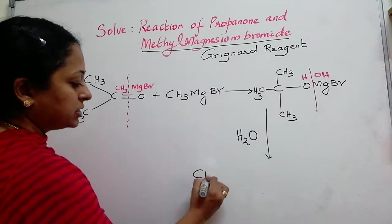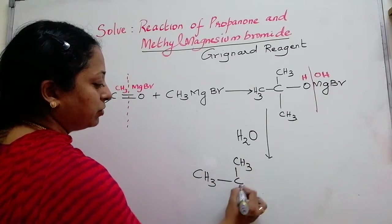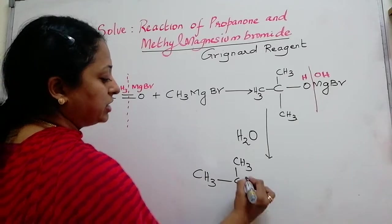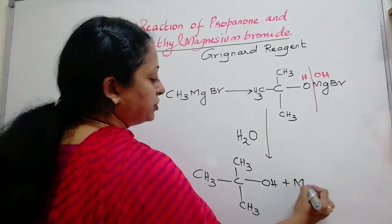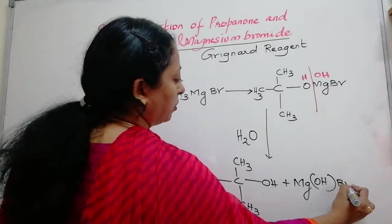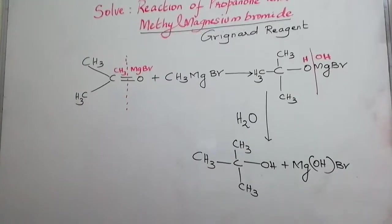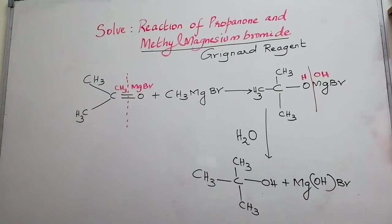So, the final answer will become CH3C. That same thing you need to copy. Only the change is OH plus Mg(OH)Br on the other side. So, this is how we get the final answer using the Grignard reagent mechanism.